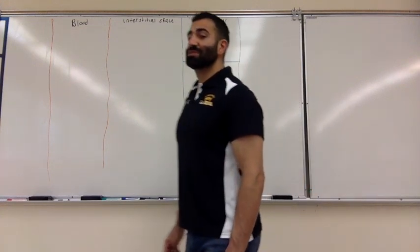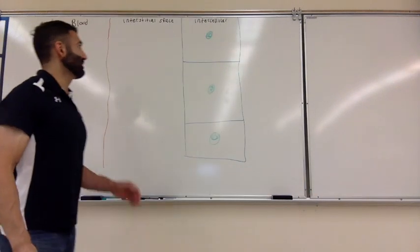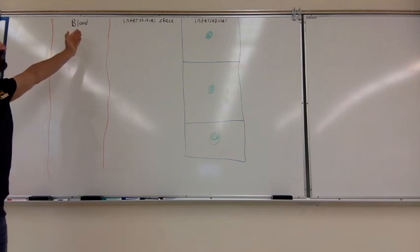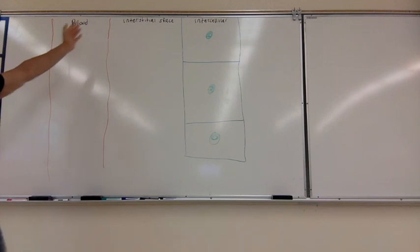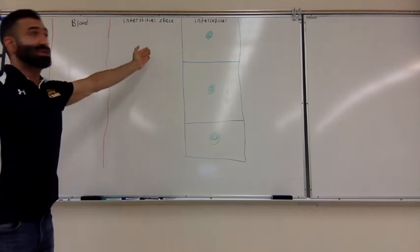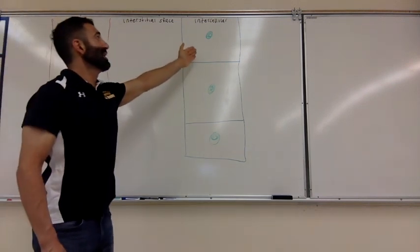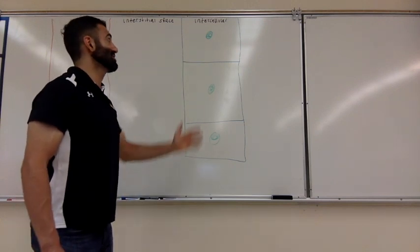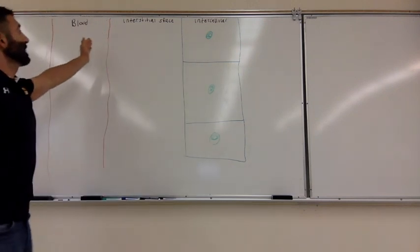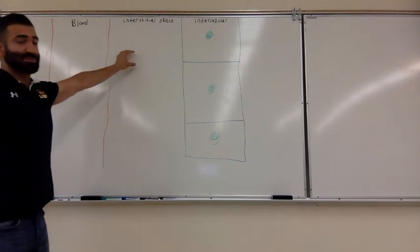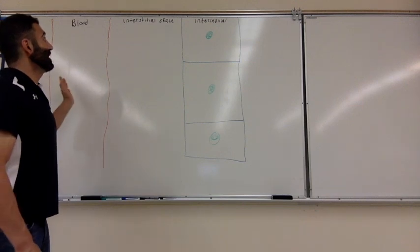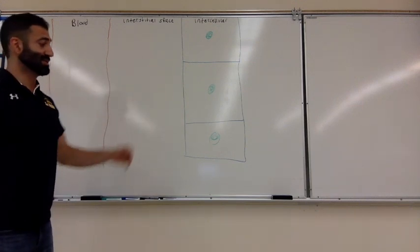Just to clarify, there are three systems or three parts of the body that transport nutrients: blood, then the interstitial space, then the intracellular environment. Waste products go in reverse. So think of the interstitial space as the buffer zone between the blood and the intracellular space.